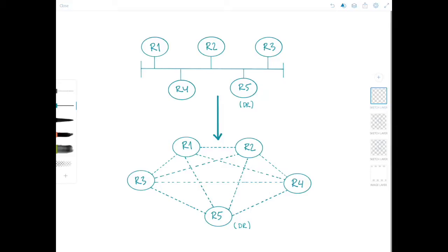Now in a broadcast network of five routers, there would be ten adjacencies between the routers. This is what I've depicted on the screen here. So these five routers would have to form these ten adjacencies.